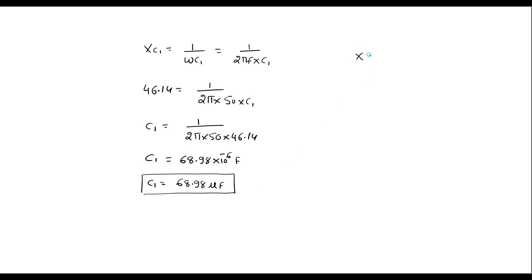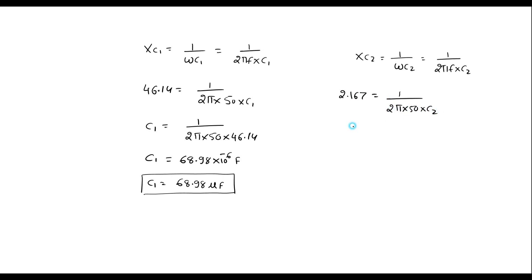Similarly, XC2 = 1 / (ω·C2) = 1 / (2π·F·C2). XC2 is 2.167, so 2.167 = 1 / (2π × 50 × C2). Therefore C2 = 1 / (2π × 50 × 2.167), which gives C2 = 1.468 microfarad.